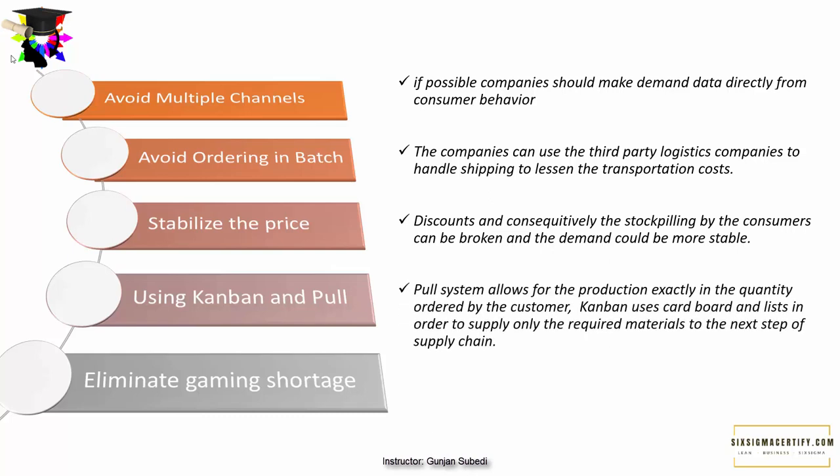This can be achieved by using the Kanban and pull system — which we will study in detail later in this course. Briefly, the pull system allows production in exactly the quantity ordered by customers. Kanban uses cards, boards, and lists to supply only the required materials to the next step of the supply chain.